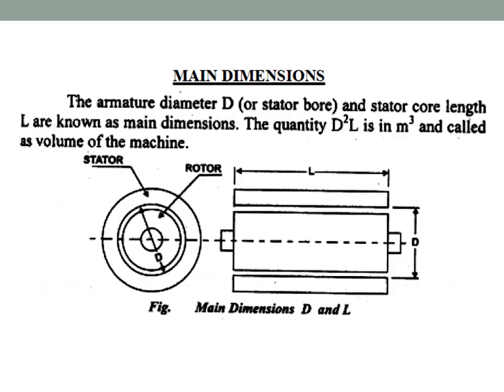The main dimensions are the stator core length L (from one end to the other) and the bore diameter D (the armature diameter). The stator is the outer part and the rotor is the inner part, and the gap between them is the air gap length.